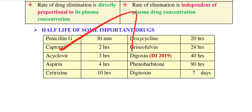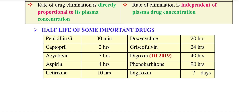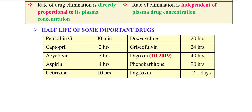Next is Acyclovir — the half-life of Acyclovir is 4 hours. The asurogenic criterion is 4 hours. You can use Aspirin — aspirin is also 4 hours.